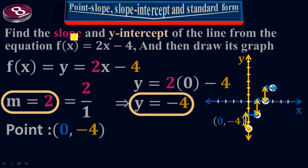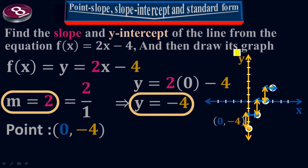The equation asks us to find the slope and y-intercept of the line. We calculated the slope, which is m equals 2. In the form y equals mx plus b, we directly get m equals 2. For the y-intercept, plugging in x equals 0 gives y equals negative 4. So the slope is 2 and the y-intercept is negative 4. The first coordinate point is (0, negative 4).